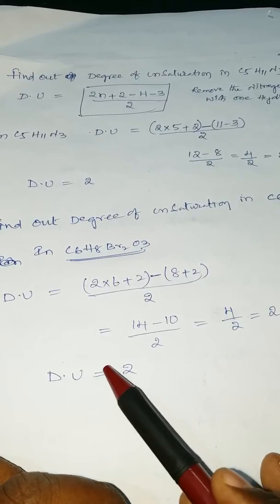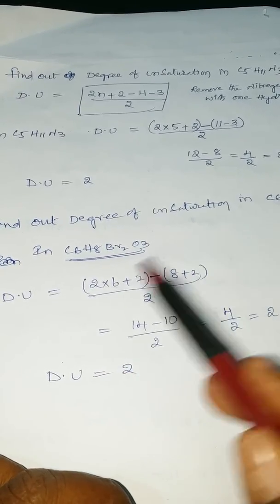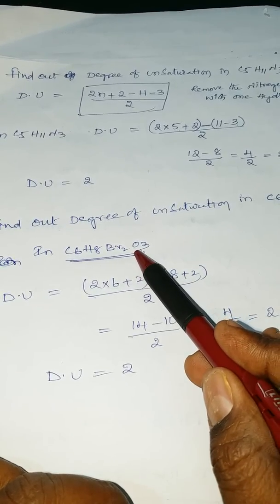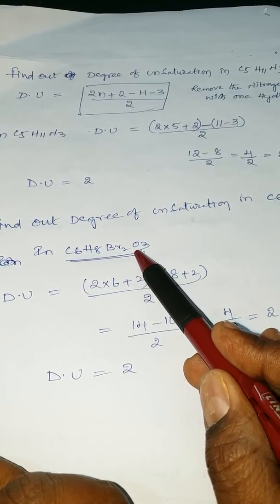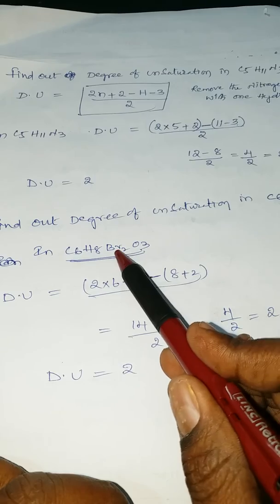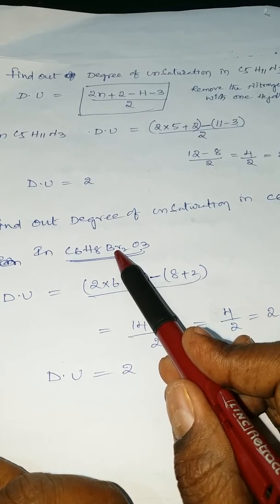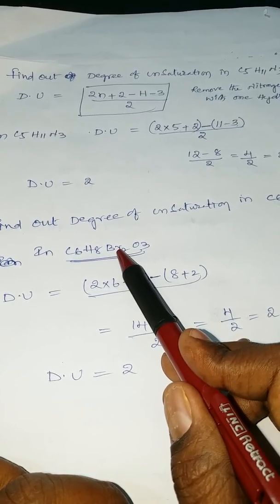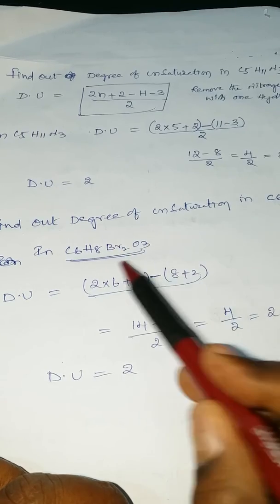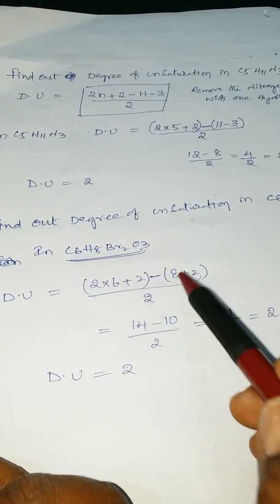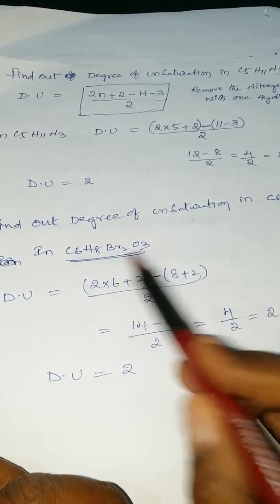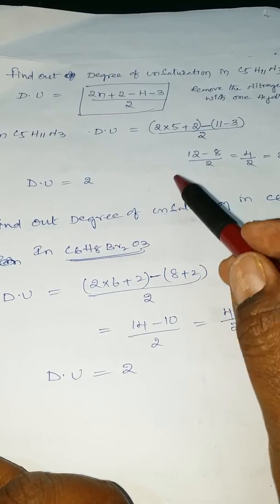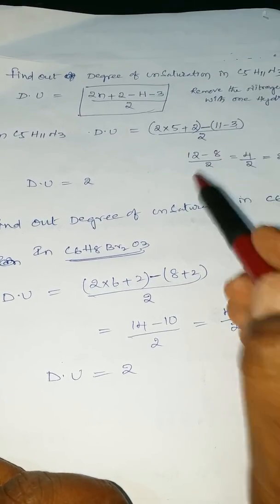The degree of unsaturation is 2. Remember: oxygens are not considered. If any halogens are present, add them to the hydrogen count — 2 halogens means add 2, 3 halogens means add 3, 4 halogens means add 4. If any halogens are there, that means minus halogens in the adjusted formula.